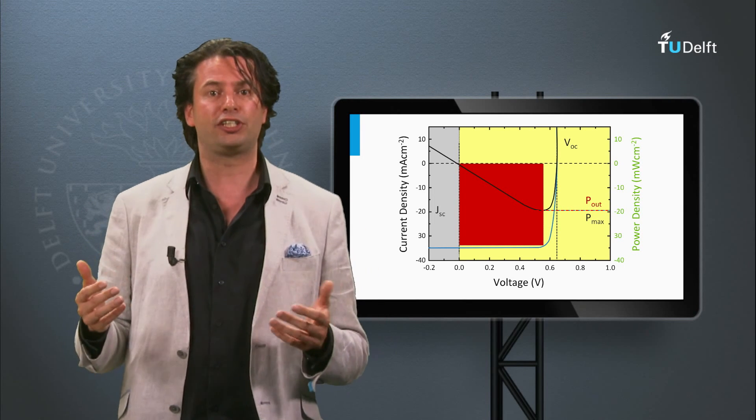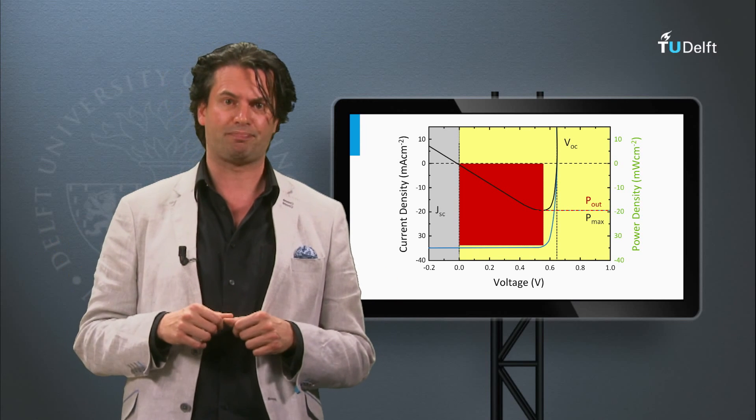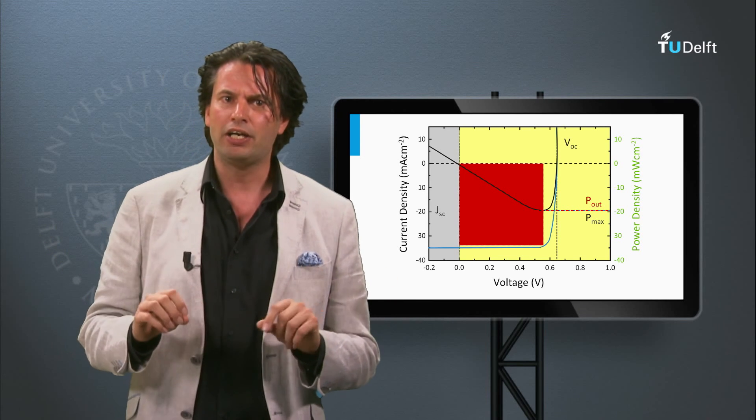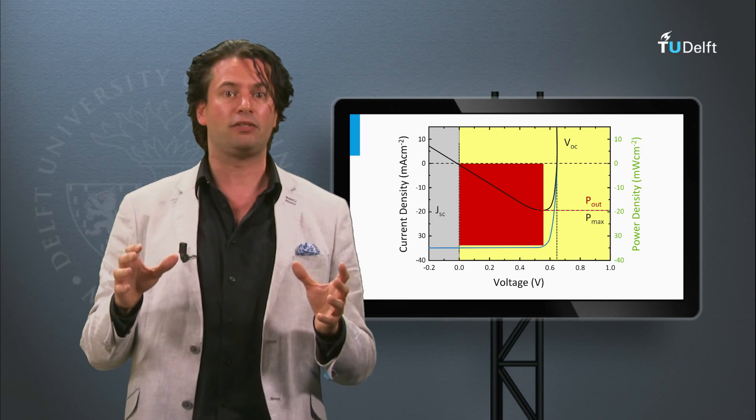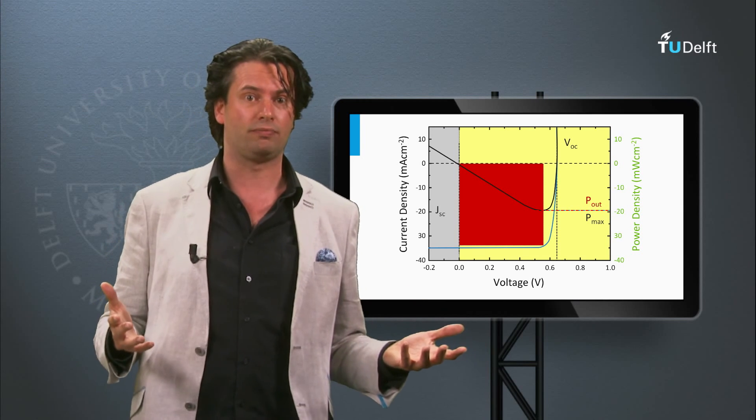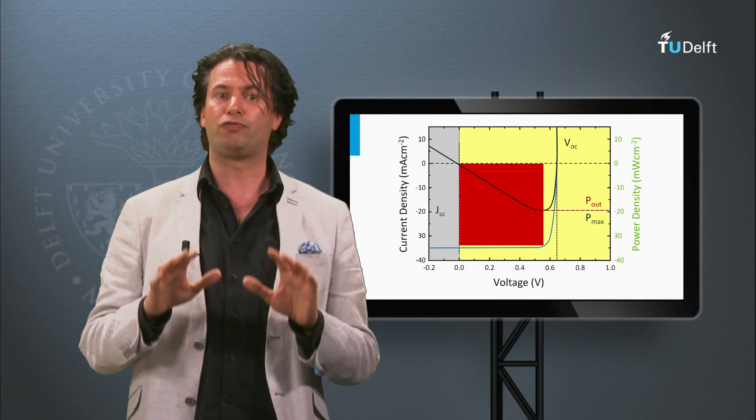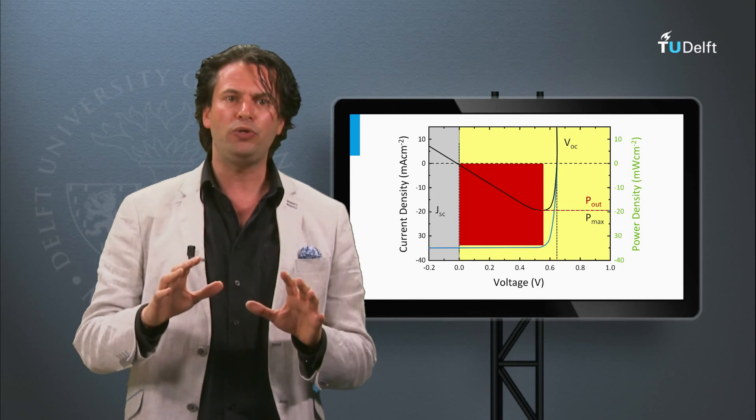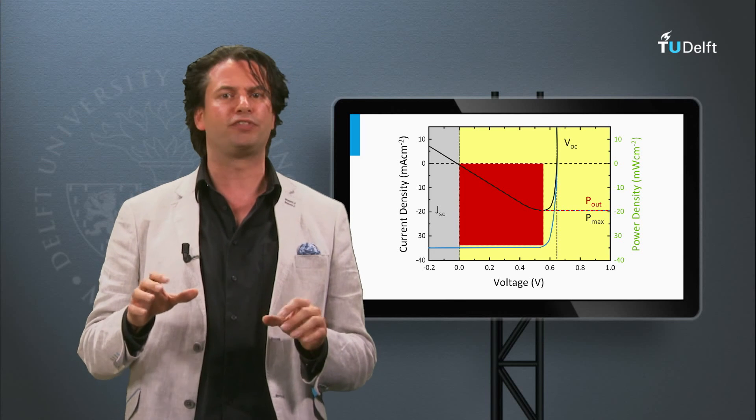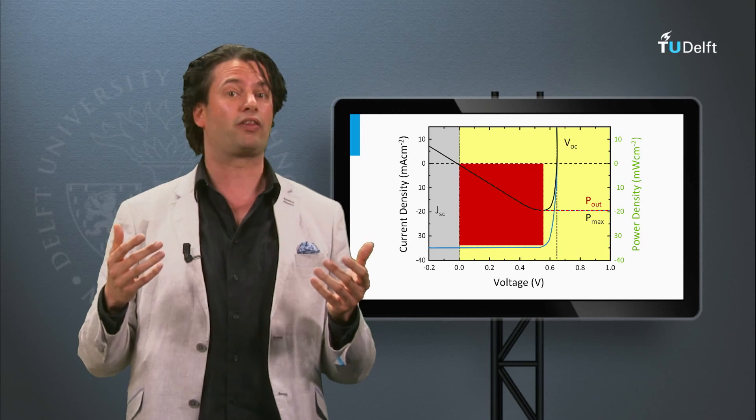So far we have discussed the external parameters of an ideal and non-ideal solar cell this week. The remainder of this week we will discuss how these external parameters are affected by the design of the solar cell. I will introduce you general design rules for solar cells. These design rules will help you to understand the performance of the different PV technologies, which will be discussed in the coming three weeks.